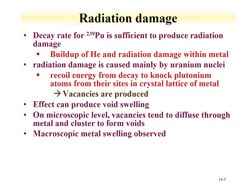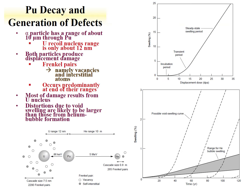Vacancies are produced, and the net effect from both the helium and this radiation damage is void swelling. On the microscopic level, the vacancies will diffuse together and cluster, and what's observed is that the metal swells. Here's an example of some radiation damage. An alpha particle has a range of about 10 microns through plutonium metal. The uranium recoil range is much, much smaller — 12 nanometers.